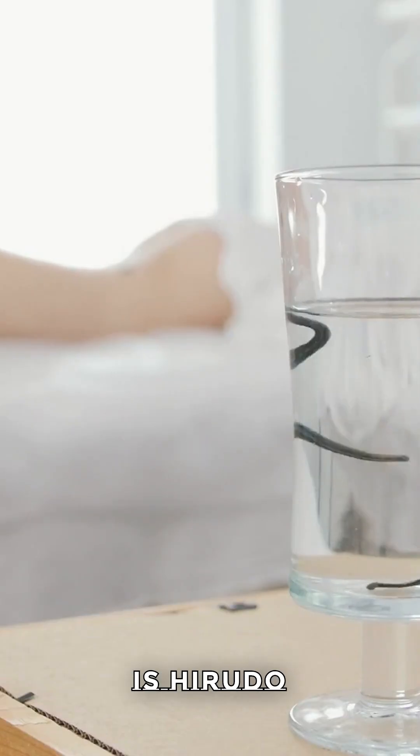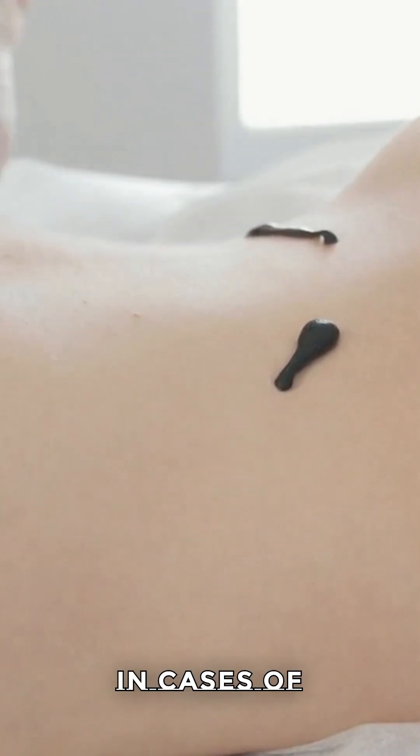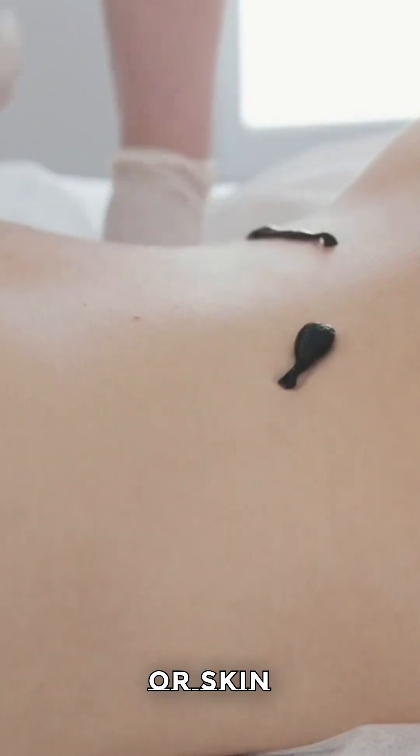The most well-known species used is Hirudo medicinalis, closely related to Hirudo verbana, and it plays a key role in microsurgery, particularly in cases of reattaching severed fingers, ears, or skin grafts.